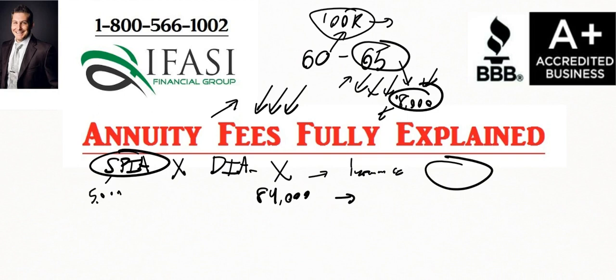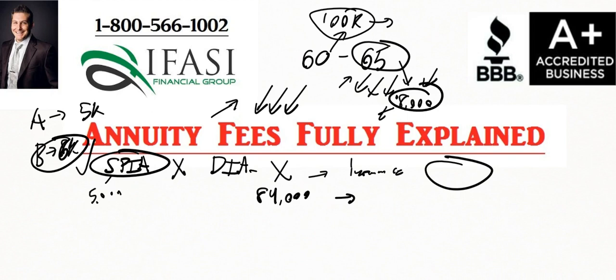When someone is getting set up in an annuity contract, it all depends upon the day they're setting it up. A single premium immediate annuity today could be completely different from three months from today because it's a combination of actuarial data, interest rates, and the longevity risk the insurance company wants to take on. That's why company A might offer $5,000 on a SPIA while company B offers $6,000, or company A offers $8,000 on a DIA while company B offers $10,000.